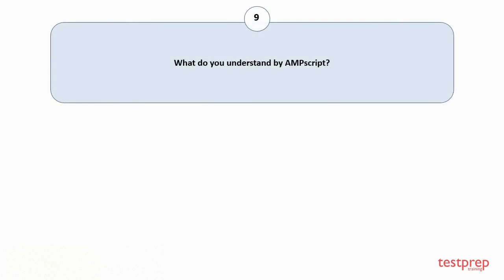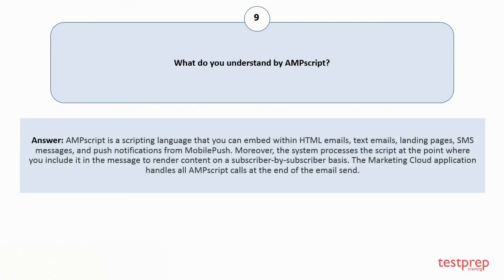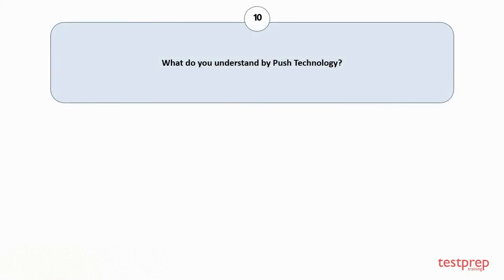Question number nine: what do you understand by AMPscript? AMPscript is a scripting language that you can embed within HTML emails, text emails, landing pages, SMS messages, and push notifications from Mobile Push. The system processes the script at the point where you include it in the message, to render content on a subscriber-by-subscriber basis. The Marketing Cloud application handles all AMPscript calls at the end of the email send.